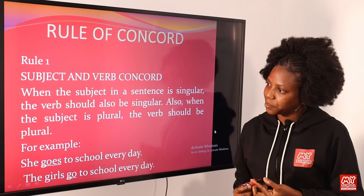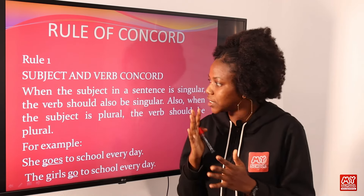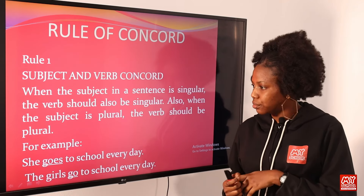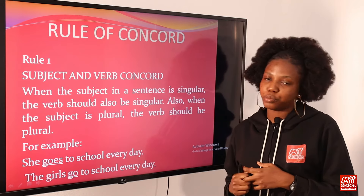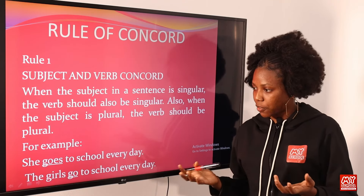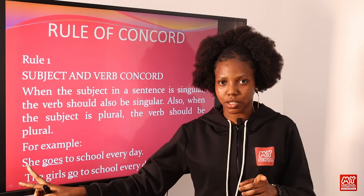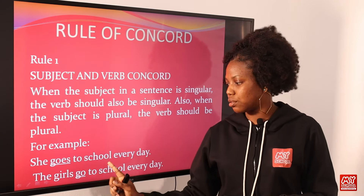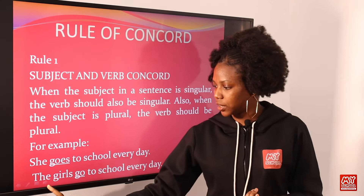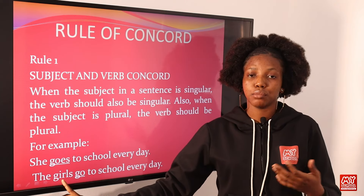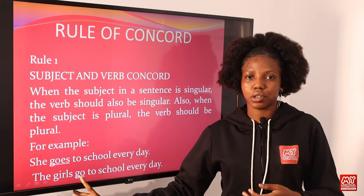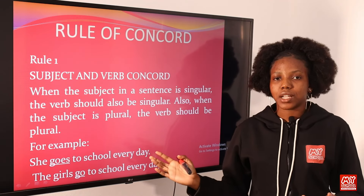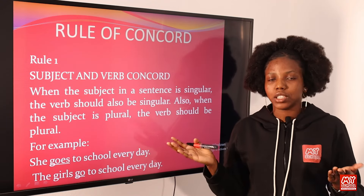Rule one is subject-verb Concord. When the subject in the sentence is singular, the verb should also be singular; when the subject is plural, the verb should be plural. For example, 'she' is singular so we use 'goes': 'She goes to school every day.' And 'the girls' is plural so we use 'go': 'The girls go to school every day.'